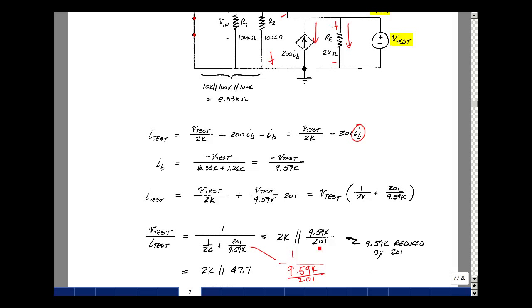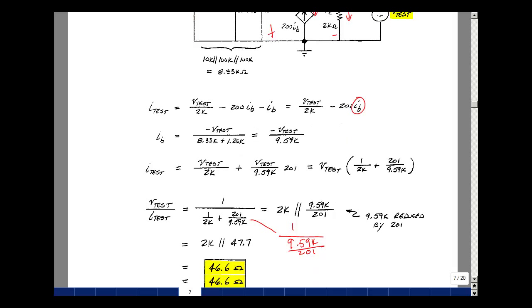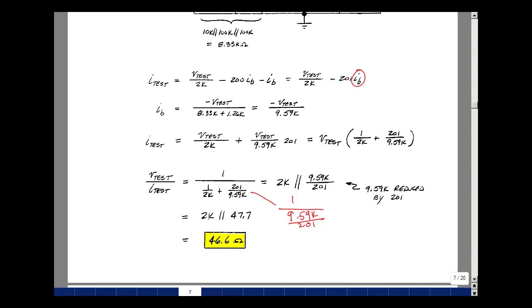So what I've got now is 2k, not parallel with 9.59k, but that divided by 201. So that's 47.7 ohms. And that's just about the same value, since this is so much bigger than this. But the final parallel combination is 46.6. And this is supplemental problem 4.7.